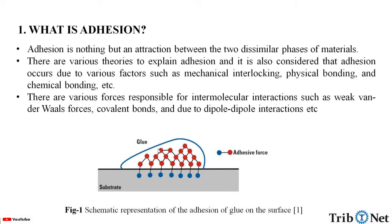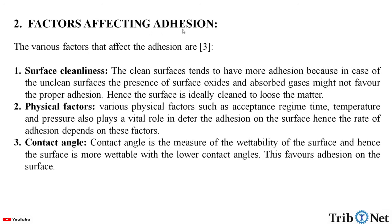Here we can see the schematic representation of the adhesion of the glue on the surface. Factors affecting adhesion: the various factors that are affecting adhesion are surface cleanliness, physical factors, and contact angle. Clean surfaces tend to have more adhesion because in the case of unclean surfaces, the presence of surface oxides and absorbed gases might not favor proper adhesion. Hence, the surface is ideally kept clean.